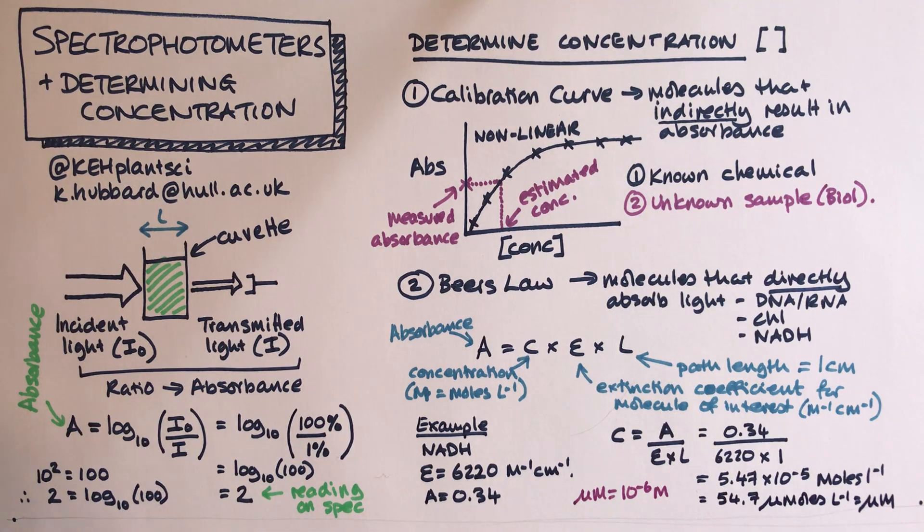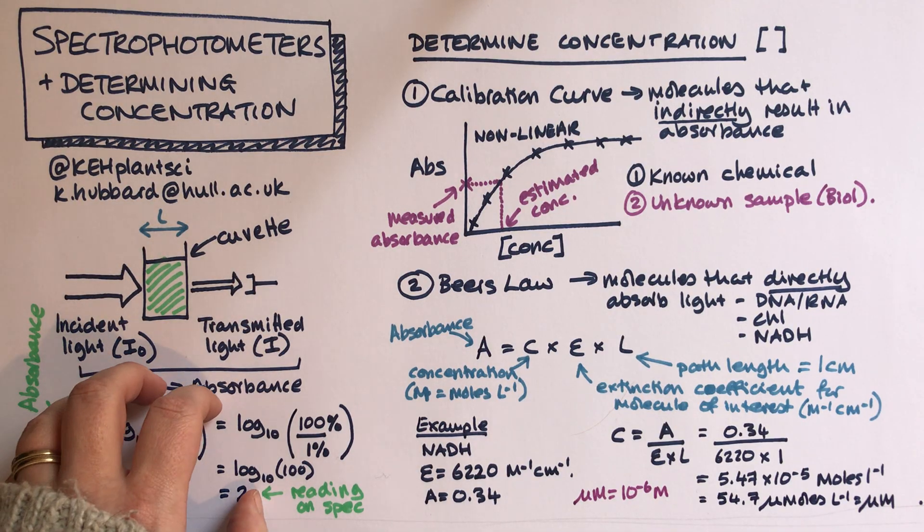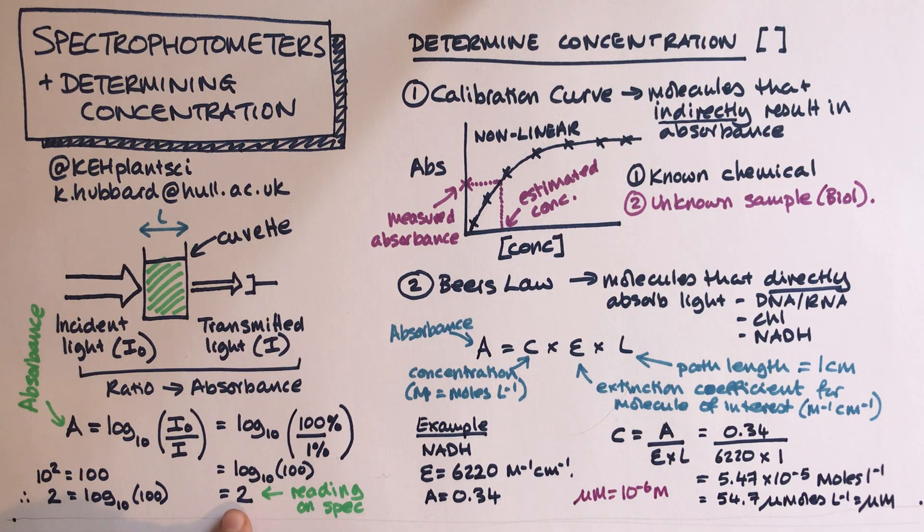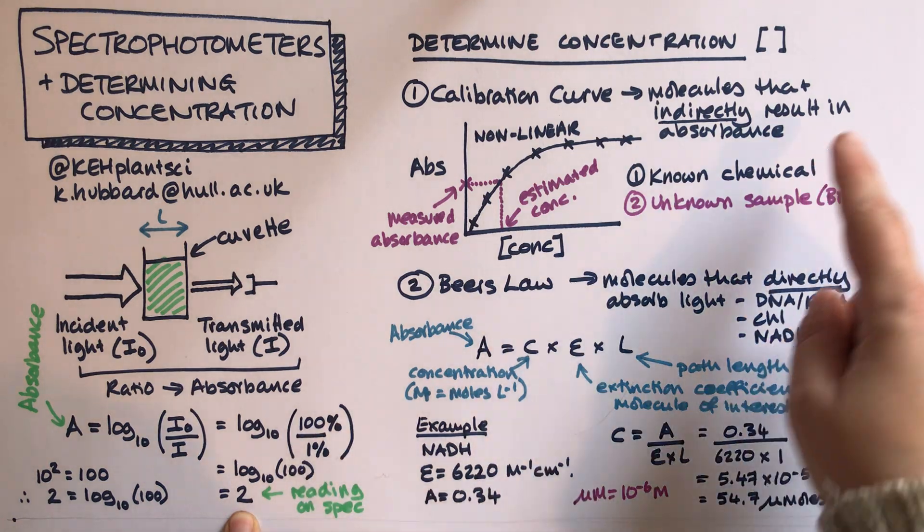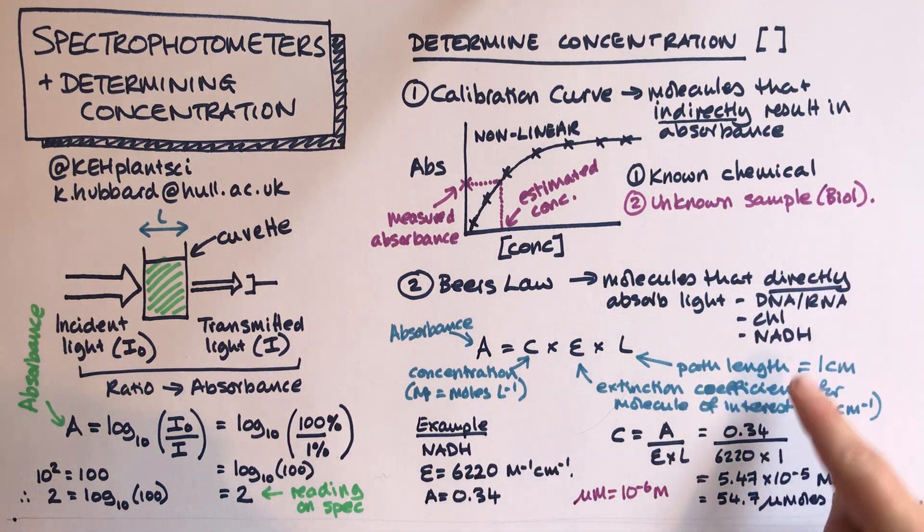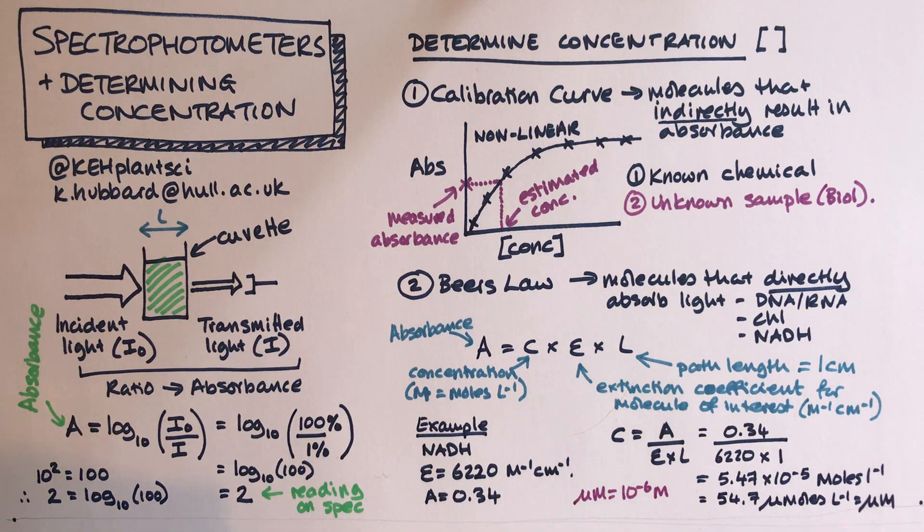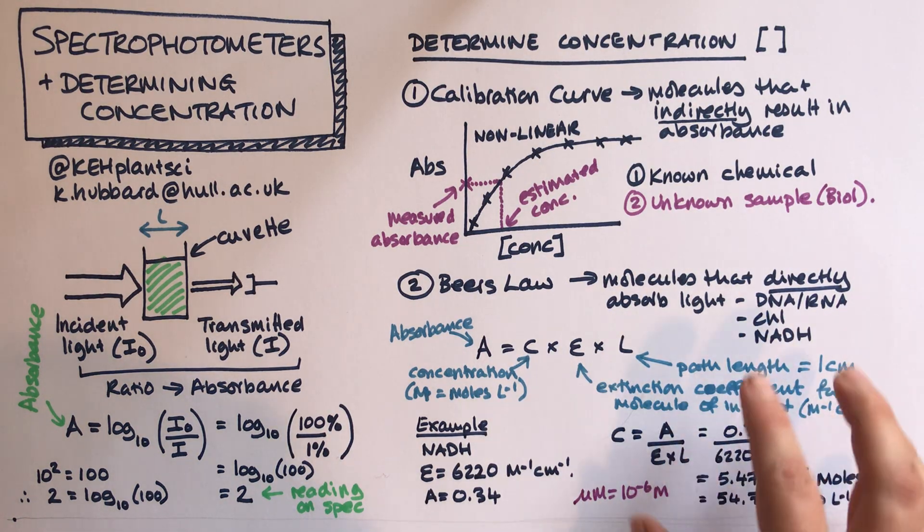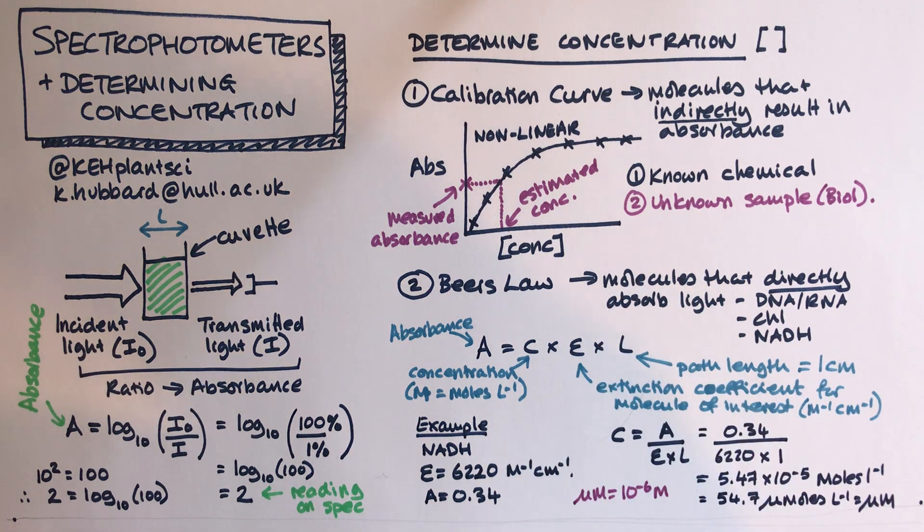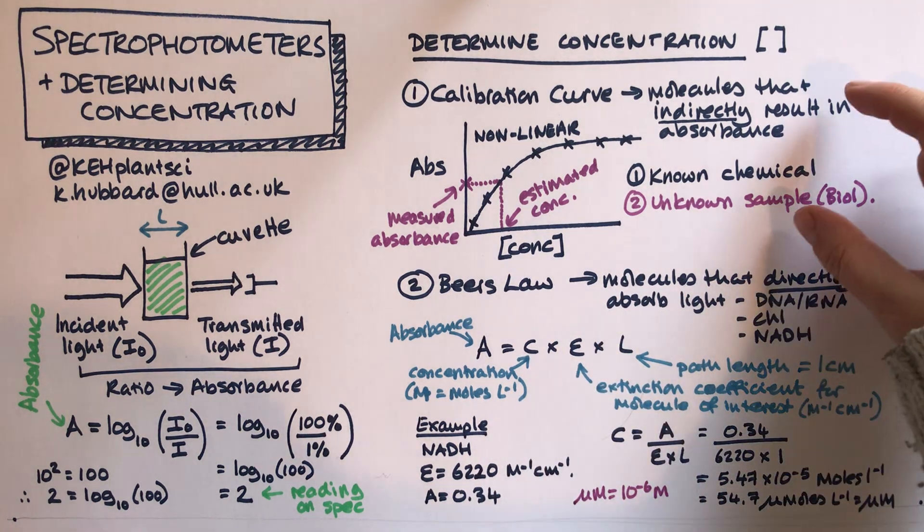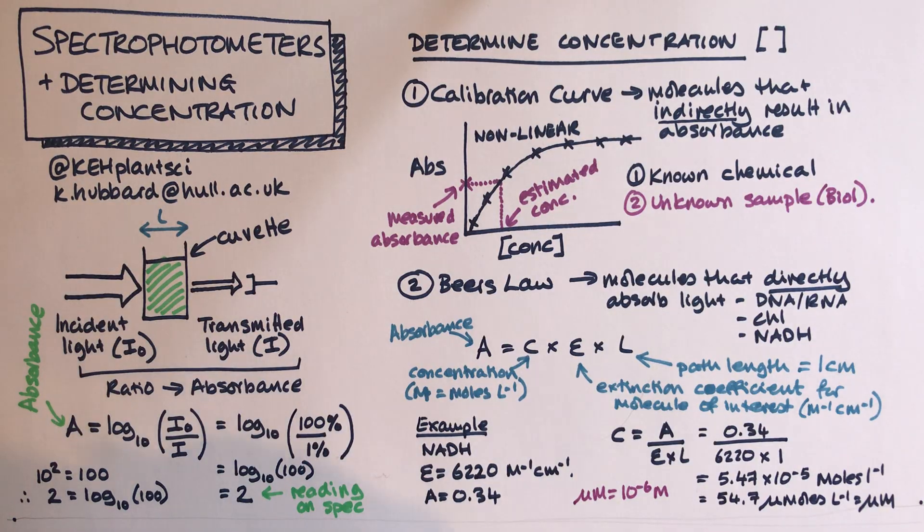We've got two different ways of using our spectrophotometer. It's all based on the light beam passing through the sample. The machine does this calculation to get your absorbance for you, so you'd read that absorbance value. Then you can either use a calibration curve or Beer's law in order to work out the concentration of your molecule. If the molecule directly absorbs light, then you'd be using Beer's law. That's good for things like NADH or chlorophyll. If it indirectly absorbs, like a Bradford assay, then you'd have to use the calibration curve.